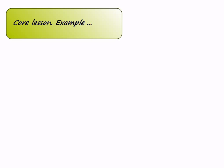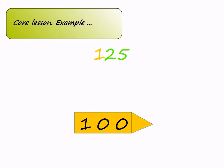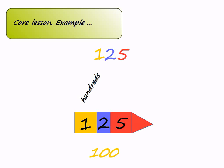Let's build the number 125 using arrow cards. First I'm going to start with 100. On top of that, I'm going to add 20, and finally the 5. The 1 is in the hundreds, so it's worth 100. The 2 is in the tens place, so its place value is 20. And 5 is in the ones, so it remains 5 only.